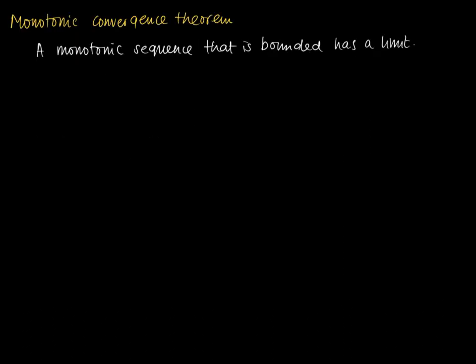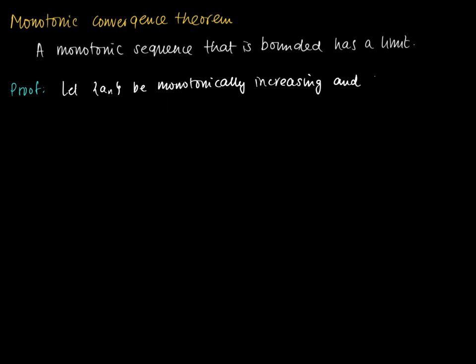Here is the proof of the Monotonic Convergence Theorem: a monotonic sequence that is bounded has a limit. Suppose we have a monotonically increasing and bounded sequence; the proof for the monotonically decreasing case works the same way. Without loss of generality, assume a_n is monotonically increasing and bounded.